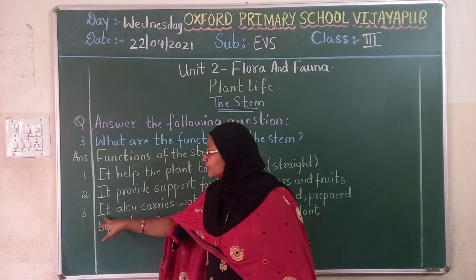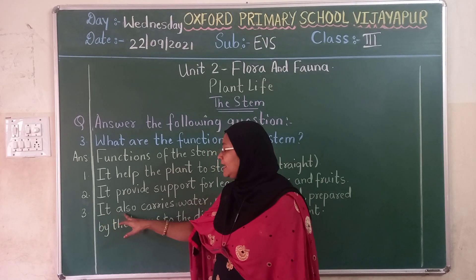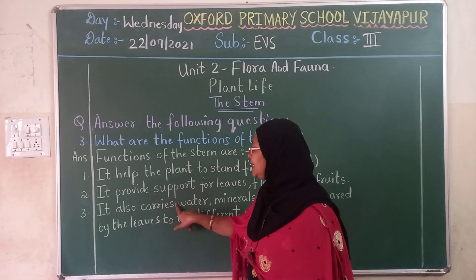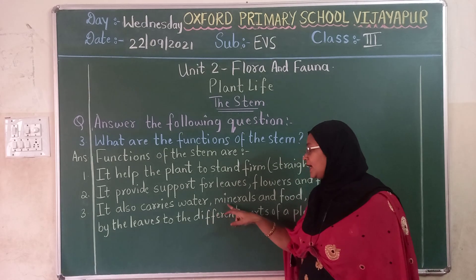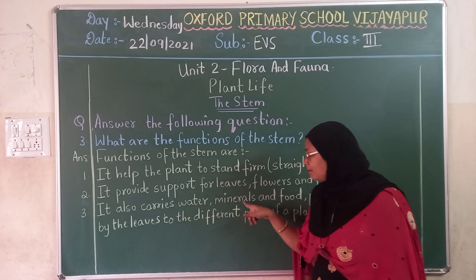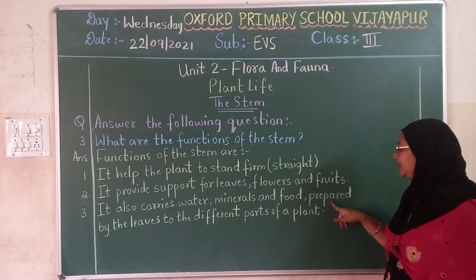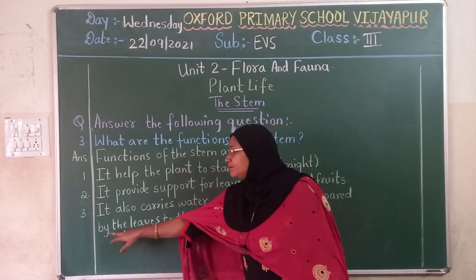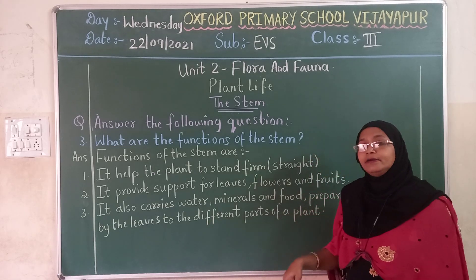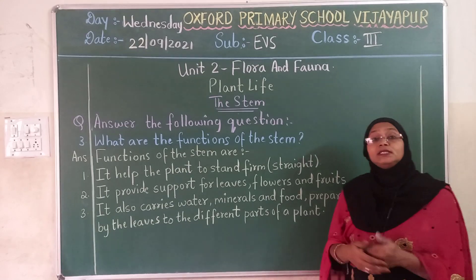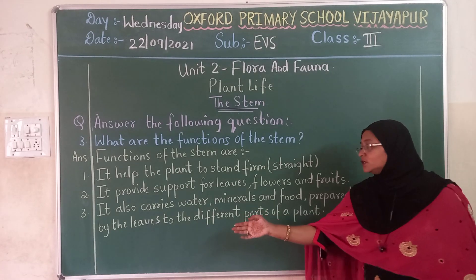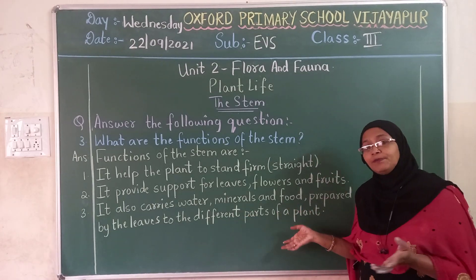And the third function of the stem: it also carries water, minerals and food prepared by the leaves to the different parts of the plant. It also carries A-L-S-O carries C-A-R-R-I-E-S water W-A-T-E-R, minerals M-I-N-E-R-A-L-S, and food F-O-O-D prepared P-R-E-P-A-R-E-D by the leaves L-E-A-V-E-S to the different D-I-F-F-E-R-E-N-T parts of a plant. And the food is prepared by the leaves, and it sends to the different parts of the plant.